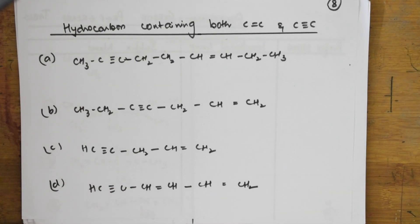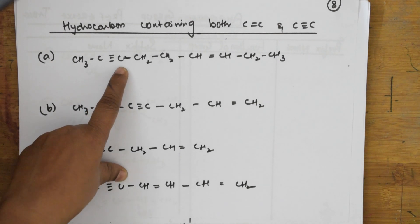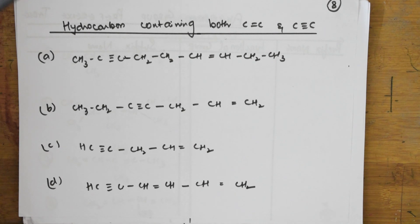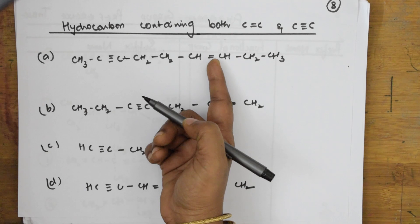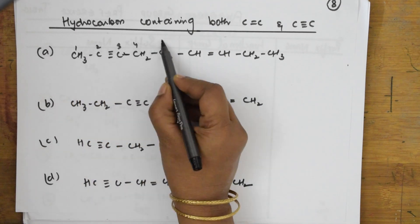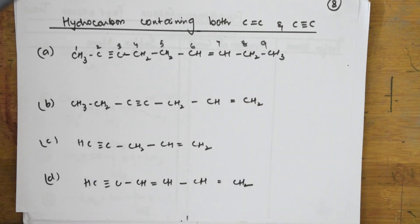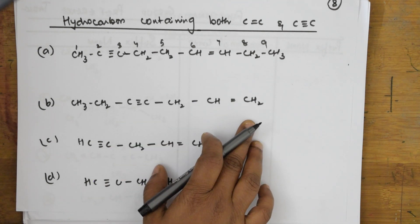Now let's look at alkynes — triple bonds. The same rule applies: the triple-bonded carbon should get the minimum number. Importantly, when both alkenes and alkynes are present, alkynes get priority for the lowest number over alkenes. So number the chain starting from the end closest to the triple bond.